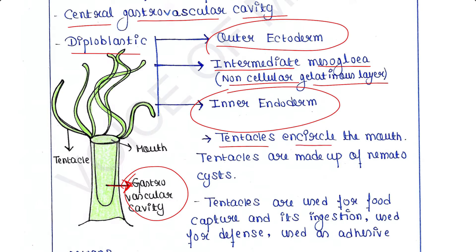Tentacles encircle the mouth. In the picture we can see the mouth and the number of tentacles around it. Tentacles are made up of nematocysts — nematocysts are specialized cells present in the tentacles.